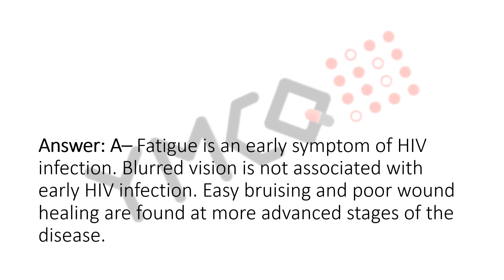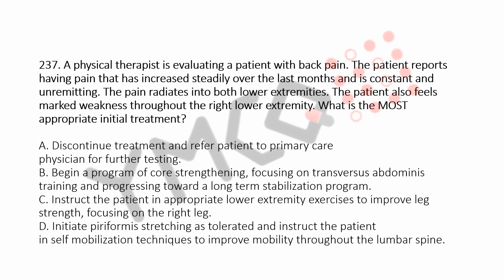Now let's move to question number 237. A physical therapist is evaluating a patient with back pain. The patient reports having pain that has increased steadily over the last months and is constant and unremitting. The pain radiates into both lower extremities. The patient also feels marked weakness throughout the right lower extremity. What is the most appropriate initial treatment? Option A: Discontinue treatment and refer patient to primary care physician for further testing.